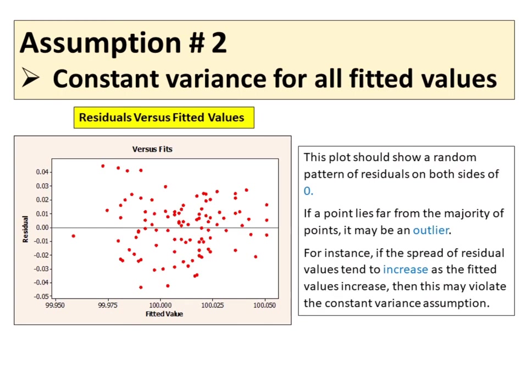The second assumption is constant variance for all fitted values. A method of checking this is to construct a residuals versus fitted values plot. This plot should show a random pattern of residuals on both sides of zero. If a point lies far from the majority of points, it may be an outlier. There should not be any recognizable patterns in the residual plot. If the spread of residual values tends to increase as the fitted values increase, this may violate the constant variance assumption.